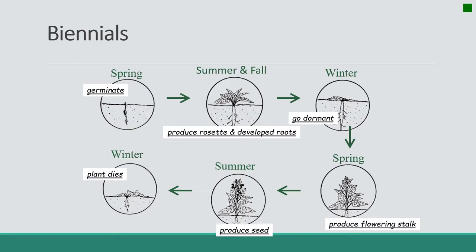Biennials will germinate in the spring of their first year, produce a rosette, and develop roots over the summer and fall of their first year, build up underground biomass, and go dormant over the winter. Then in the spring of their second year, they will sprout, produce a flowering stalk, and then over summer produce seed, and into the fall and winter they will die. This is a two-year life cycle for biennials.